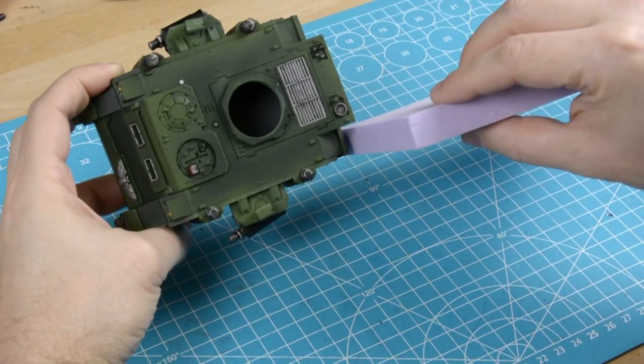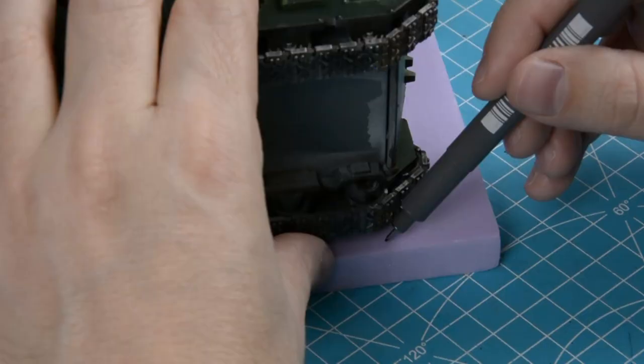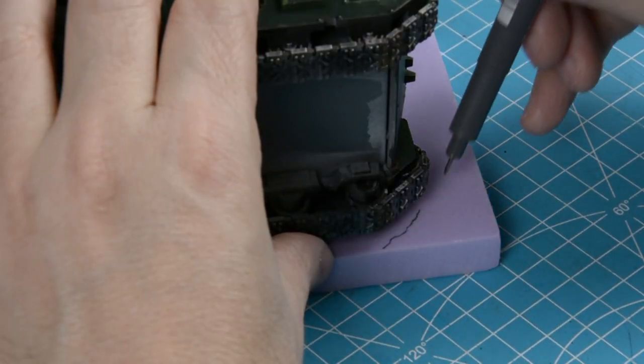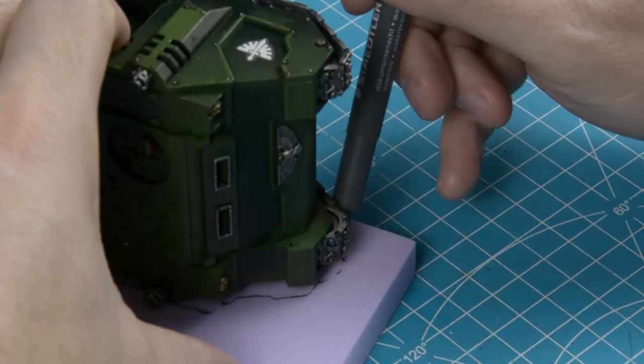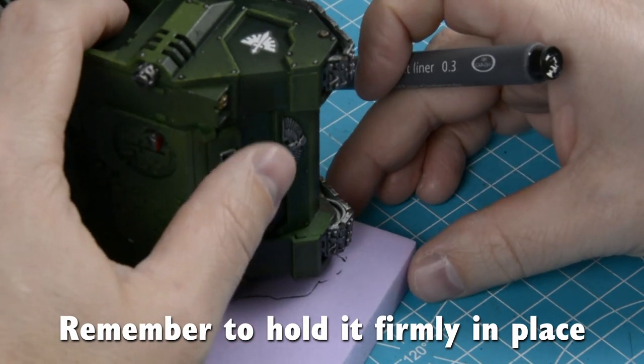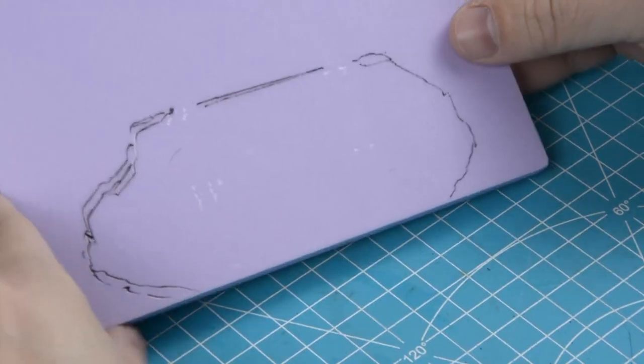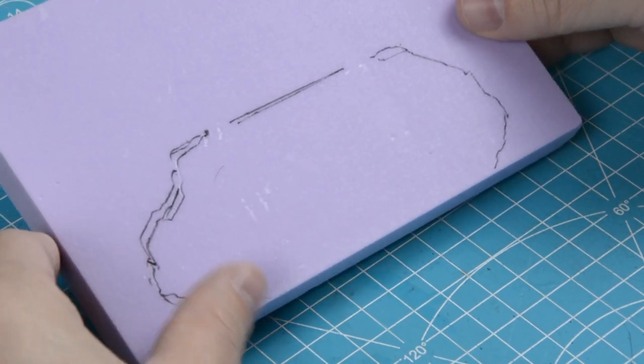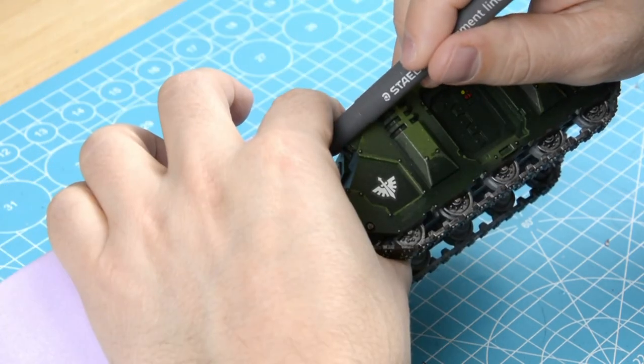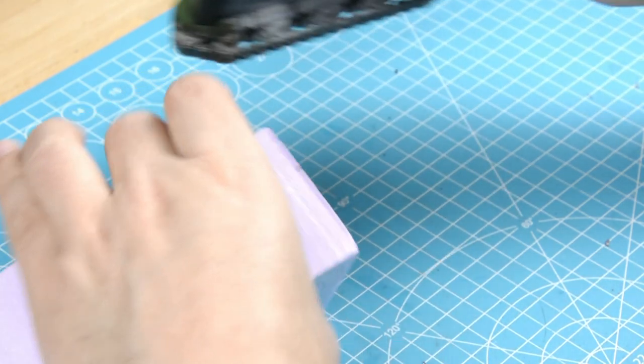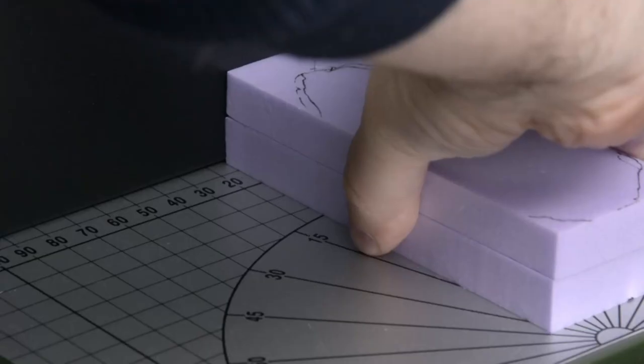This should work for the sides so let's see if we can use the tank as a template. This is looking a little sketchy but we'll make it work. I'm gonna cut these on my proxxon but if you don't have one you can use a craft knife instead.